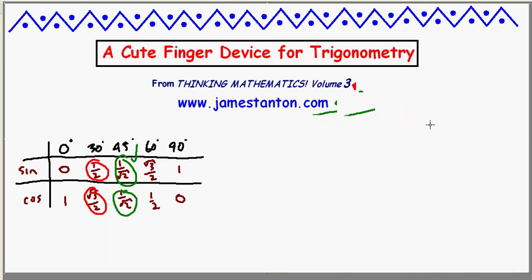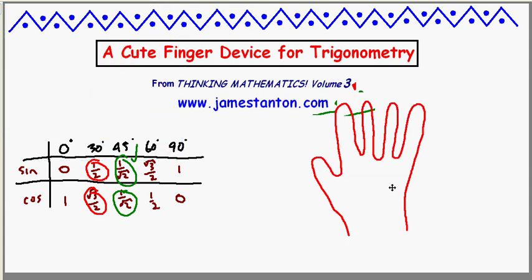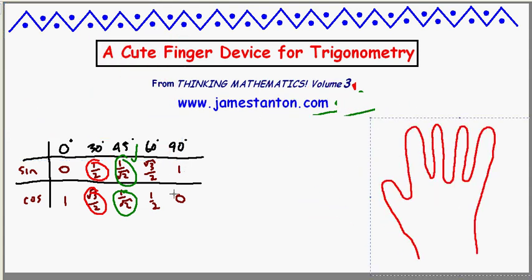Let me just do an extreme one so you see what I'm absolutely right. Let's do sine and cosine of 90 degrees. My 90 degree finger is the rightmost finger. Let's have that point down.